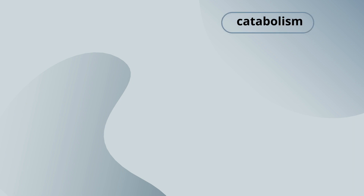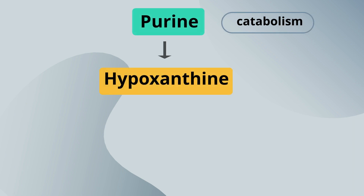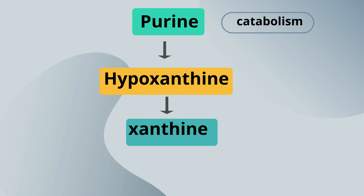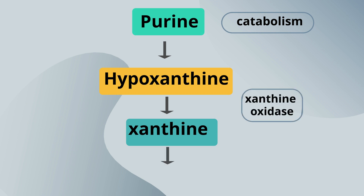Mechanism of Action: Catabolism of purines leads to hypoxanthine, which is converted into xanthine by the enzyme xanthine oxidase. Xanthine is then converted into uric acid, which is the body's normal waste product.